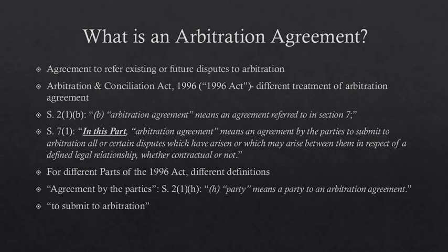Part 1 of the Act, which is the focus of this lecture, is applicable where the place of arbitration is in India. Section 2 states that 'arbitration agreement' means an agreement referred to in Section 7. Section 7 defines it as an agreement by the parties to submit to arbitration all or certain disputes which have arisen or which may arise between them in respect of a defined legal relationship, whether contractual or not.